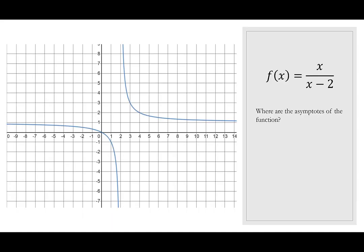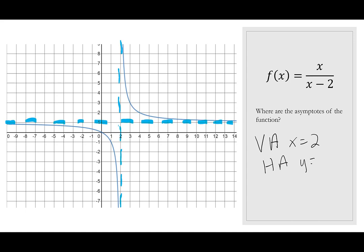We write: vertical asymptote at x = 2, horizontal asymptote at y = 1. Now let's look at some limits. The limit as x → 2⁺ of f(x): on the right side of 2, the values are going up, so the limit is positive infinity. The limit as x → 2⁻ of f(x): on the left side coming toward 2, the values are going down, so the limit is negative infinity.